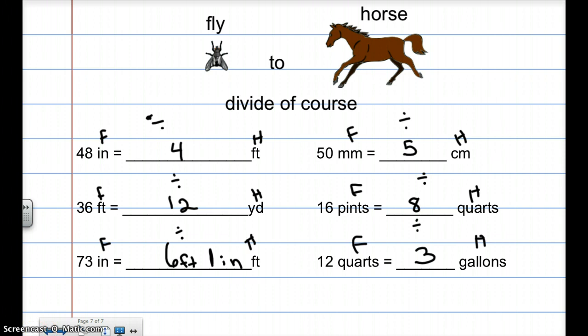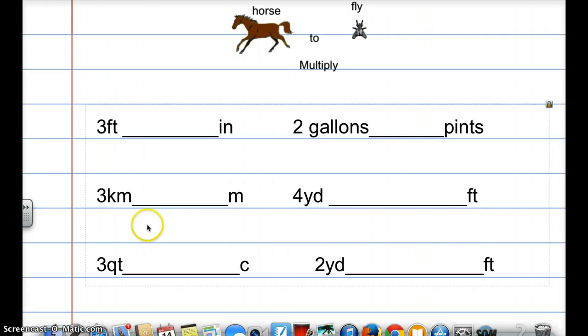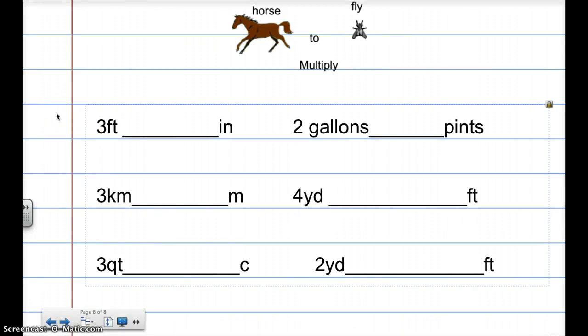Now we're going to do horse to fly, which is multiply. So now we're on to horse to fly, multiply. So feet are bigger than inches, so that's horse to fly. How many inches are in a foot? You can look at your conversion chart. That would be 12, so 3 times 12 is 36. So there are 36 inches in a foot.